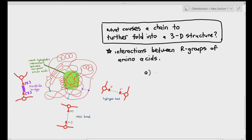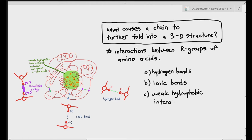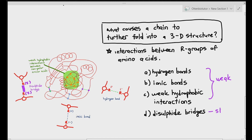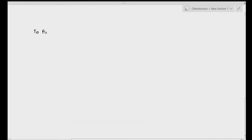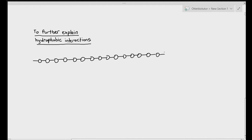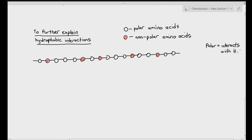The four bonds that cause the polypeptide chain to further fold into a 3D structure are: hydrogen bonds, ionic bonds, weak hydrophobic interactions, and disulfide bridges. Hydrogen bonds, ionic bonds, and hydrophobic interactions are weak — they can be easily influenced by temperature, pH, and such. Disulfide bridges are strong and not so easily broken by external factors. To explain hydrophobic interactions — in a single polypeptide chain, the white amino acids are polar and the red ones are non-polar.